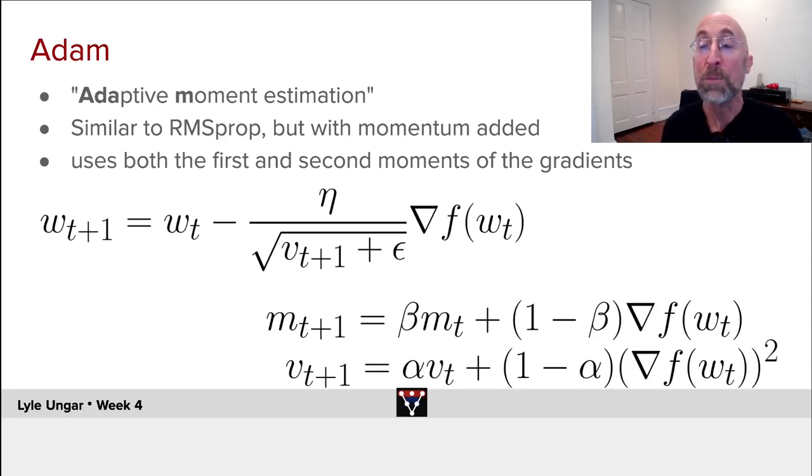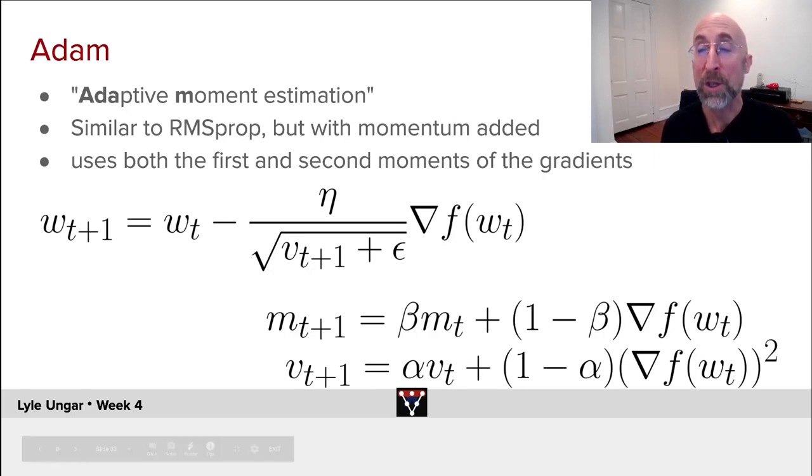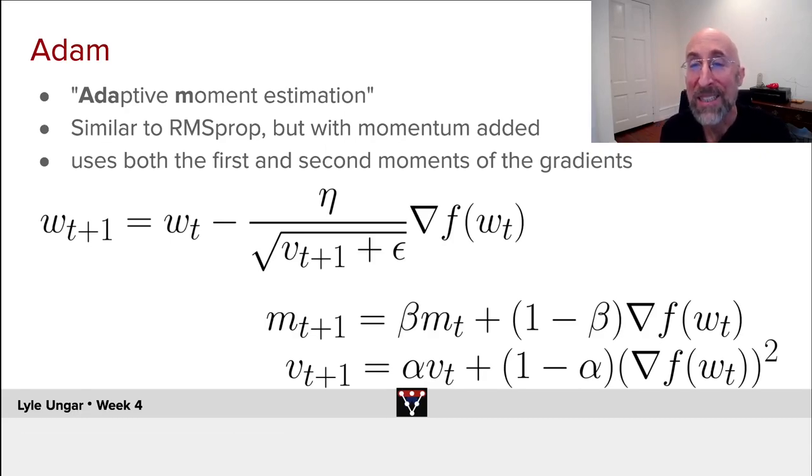...and v, which is the weighted moving average of the gradient squared, and combines the two of them together, which needs to show up in this equation, and then uses the two of them combined to give the normalization constant for the weight.